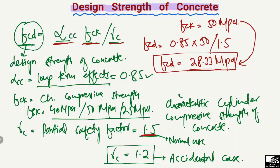fcd comes out to be 28.33 megapascals. So we reduce the value from 50 to 28.33 megapascals. This is the design strength of the concrete. It includes the factor of safety and the long-term effects, so we are more confident using this value in the design of beams or columns. Don't forget to subscribe to our channel for more engineering videos.